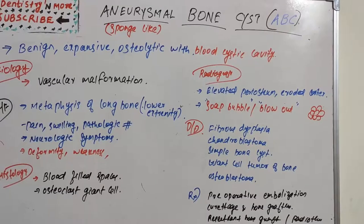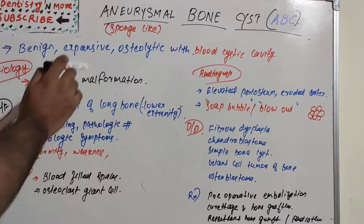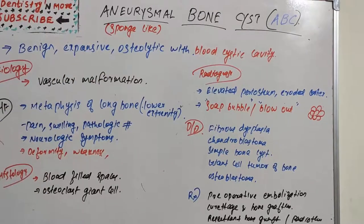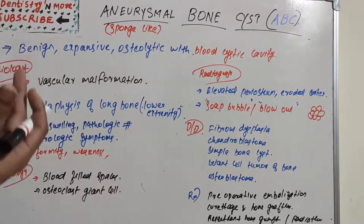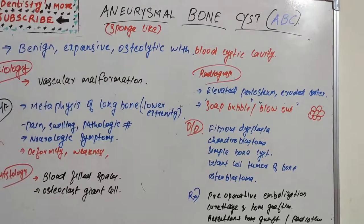Aneurysmal Bone Cyst is a benign, expansile, and osteolytic lesion with a thin wall which contains blood-filled cystic cavities. The term 'aneurysmal' is derived from its macroscopic appearance — a sponge-like tumor containing numerous giant cells. The basic pattern involves long bones with osteolytic, sponge-like lesions due to changes or malformation of vascular structures, resulting in a cyst-like cavity within the bone.